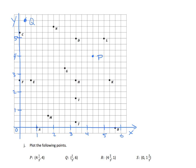Let's go to 4 and 2-thirds along the x-axis and 1 along the y. We find the intersection of 4 and 2-thirds and 1 right here, plot the point, and write the letter R. Finally, 0 for x and 1 and 2-thirds for y — an x value of 0 means we plot directly on the y-axis. Going up to 1 and 2-thirds, we plot and label that point S.